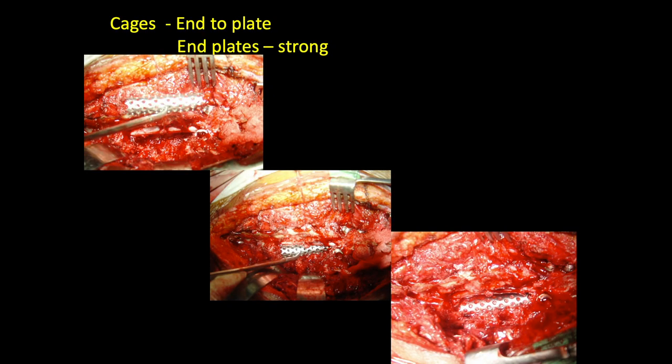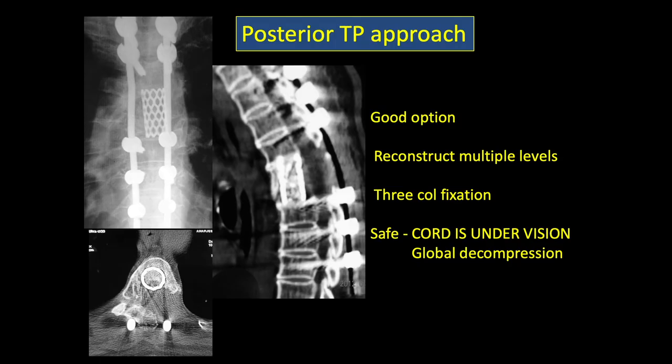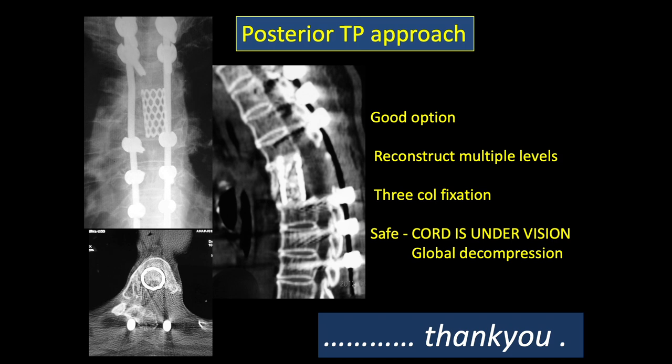We have the option of using end cages, especially if going end plate to end plate, as the end plates are strong in young or middle-aged individuals. In older patients, if going from cancellous bone to end plate, I usually prefer a tricortical graft as it can sink and has a margin for error. All in all, the transparticular approach allows us to reconstruct at multiple levels. It gives good three-column fixation and, most importantly, the cord is under vision, giving good global decompression. Thank you very much for your attention.